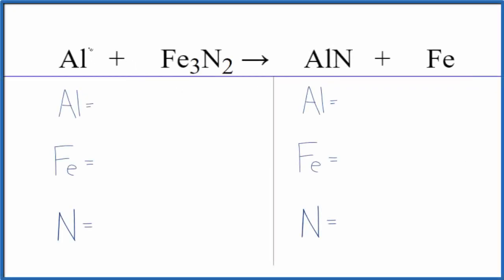In this video we'll balance the equation for aluminum plus iron two nitride. Let's count the atoms up and balance the equation.